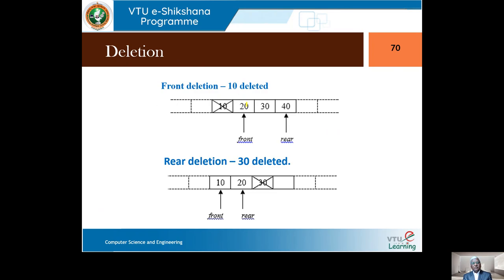Let's assume we want to insert element 5 at the front. The front pointer was pointing here originally; now it should be moved back. For insertion at the rear — say element 40 — the rear pointer has to be advanced by one. So from the original configuration of 10, 20, 30, adding 40 at the rear means the rear pointer advances. The front pointer should move backward for front insertion.